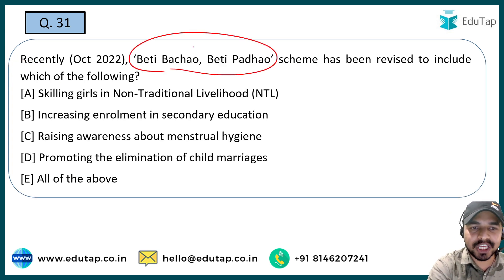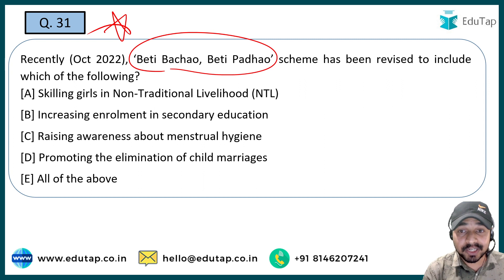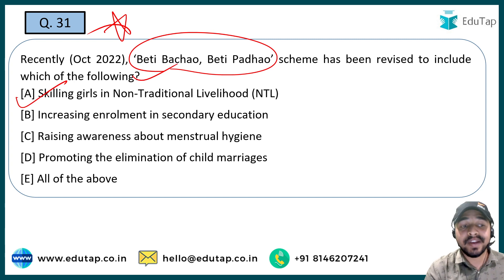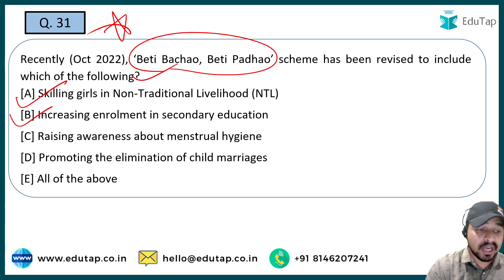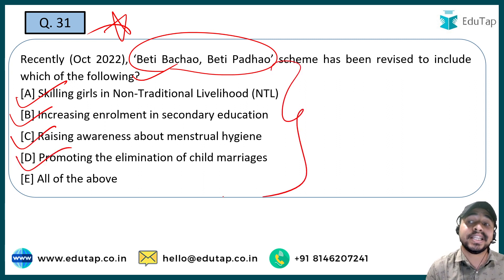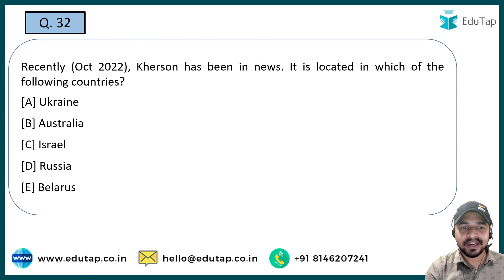The next question: Beti Bachao Beti Padhao scheme — a very important scheme launched from Panipat by Prime Minister Narendra Modi — has been revised to include which of the following? The scheme now includes skilling girls in non-traditional livelihoods, increasing enrollment in secondary education, raising awareness about menstrual hygiene, and promoting the elimination of child marriages. All these have been included, so the right answer is Option E.